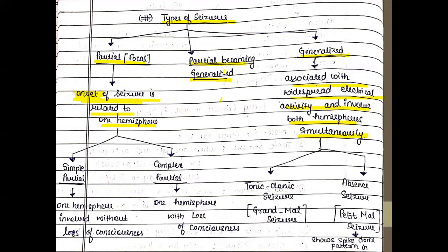Let us discuss partial or partial becoming generalized. When the seizure starts, if the muscle starts with a jerk on the left side — left hand starts with a jerk — that means seizure started in the right hemisphere; it is a partial motor seizure. But after that, if the whole body goes into seizures, it becomes generalized. So the onset was partial, converting to generalized.